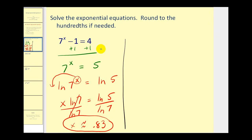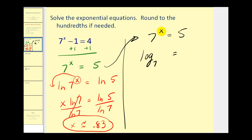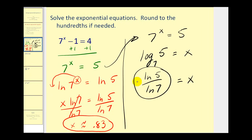For this problem, I'll show one alternative method. If we rewrite seven to the power of x equals five as a logarithmic equation, we get log base seven of five equals x. In this form, we can apply the change of base formula, so x equals the natural log of five divided by the natural log of seven — the same quotient as before. Note that this technique only works when you have one exponential part, so we'll use the steps outlined on the left for all problems.